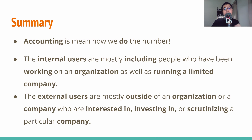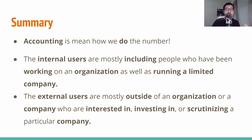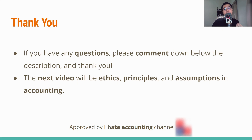Finally, we arrive at the summary section. First, what the hell is accounting? That is how we do the number. We can extend the theory: we identify, record, and communicate the economic events. Second, there are internal users and external users, and their companions are managerial accounting and financial accounting respectively. Managerial accounting and financial accounting are the activities that internal users and external users use. This is all for this video. The next video will be about ethics, principles, and assumptions in accounting. Tell me if you like it, and subscribe if you love it. See you in the next video — peace!